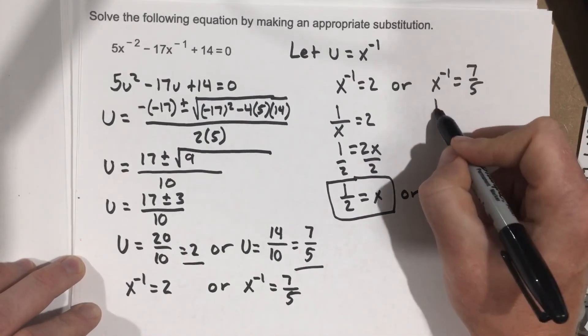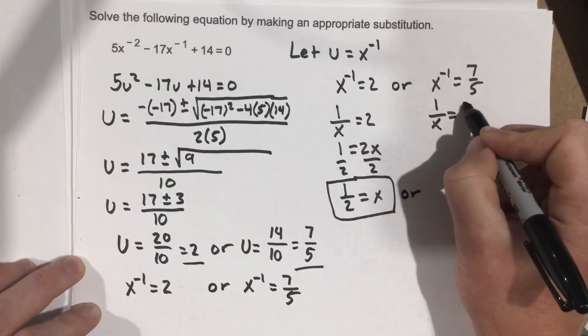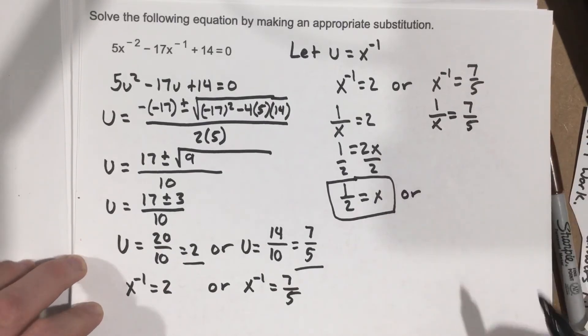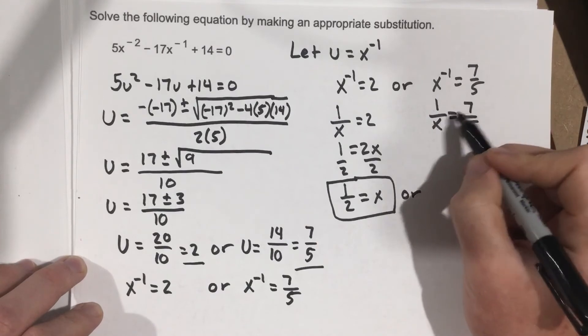Or, again, do the same thing. 1 over x equals 7 fifths. And we can actually do a nice property here. Because they're both fractions,